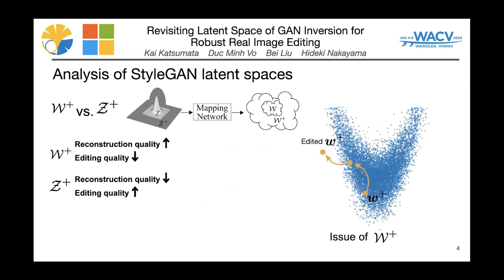I first analyzed the StyleGAN latent spaces. StyleGAN is a popular backbone architecture for a generator which takes an intermediate latent code through adaptive instance normalization at each convolutional layer of the generator. Two major latent spaces in StyleGANs are Z and W. Latent codes in Z are sampled from a hypersphere prior and transformed to W space via mapping networks, which consist of an 8-layer multi-layer perceptron. W is copied several times and sent to different layers of the generator, and we can use different W for different layers. Similarly, we can also use different Z for different layers. By extending Z and W space, we can obtain Z+ and W+ spaces.